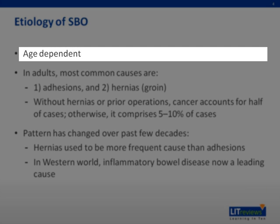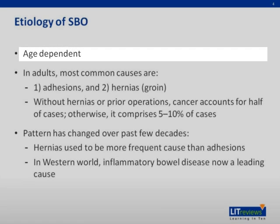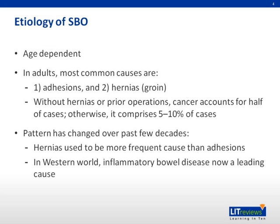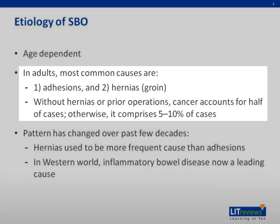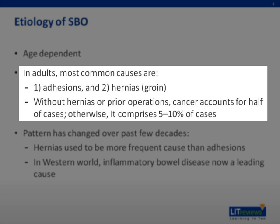The etiology of small bowel obstruction is age-dependent. Discussing causes in pediatric patients is outside the scope of this presentation. In adults, the most common causes are adhesions and groin hernias. The majority — 75% — are attributed to intra-abdominal adhesions from prior operations, especially colorectal surgery. The rate of adhesive small bowel obstruction is highest in the first few post-op years, but the risk remains lifelong.